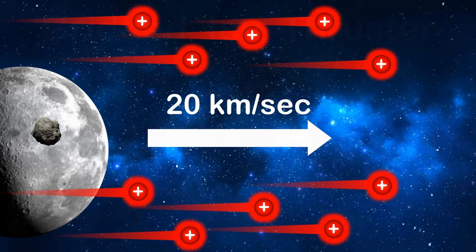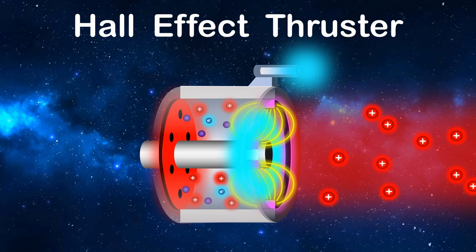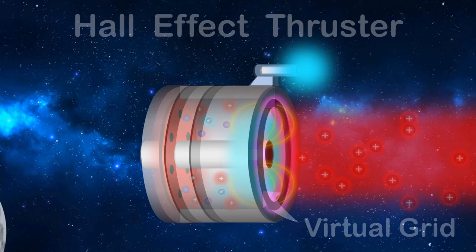So unlike the gridded ion thruster, which uses a physical metal grid to accelerate ions, the hall thruster uses a virtual grid made of electrons, and this doesn't erode over time. But there is a final issue.